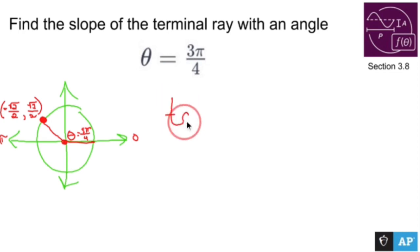Oh, because the tangent of my angle is just y over x. Oh, so tangent is the slope of the terminal ray. Oh, this all makes sense now.